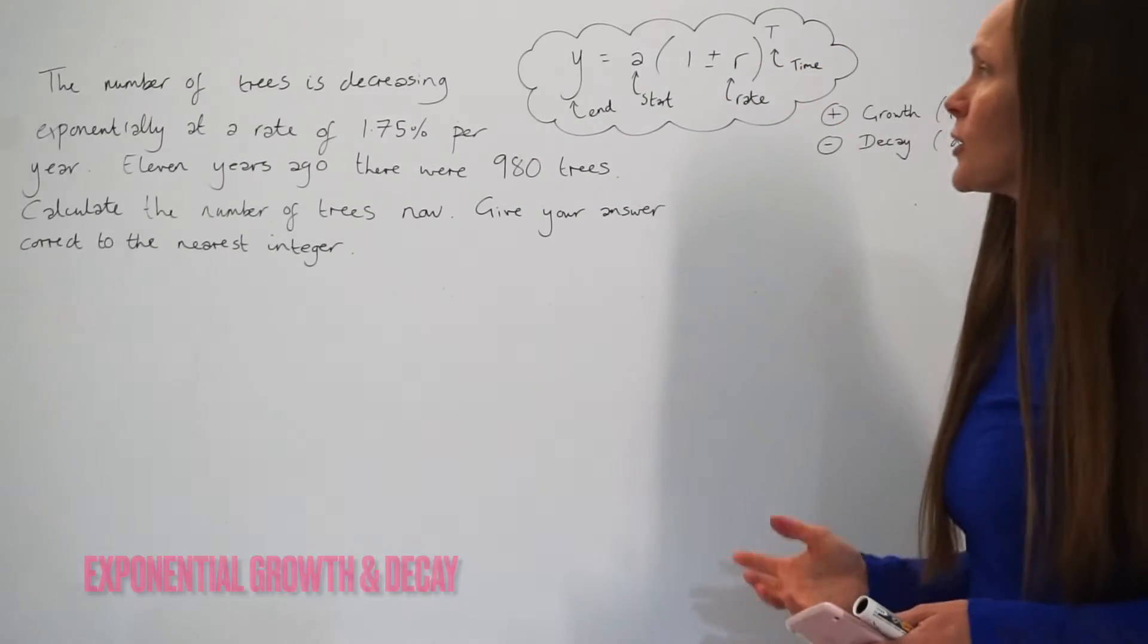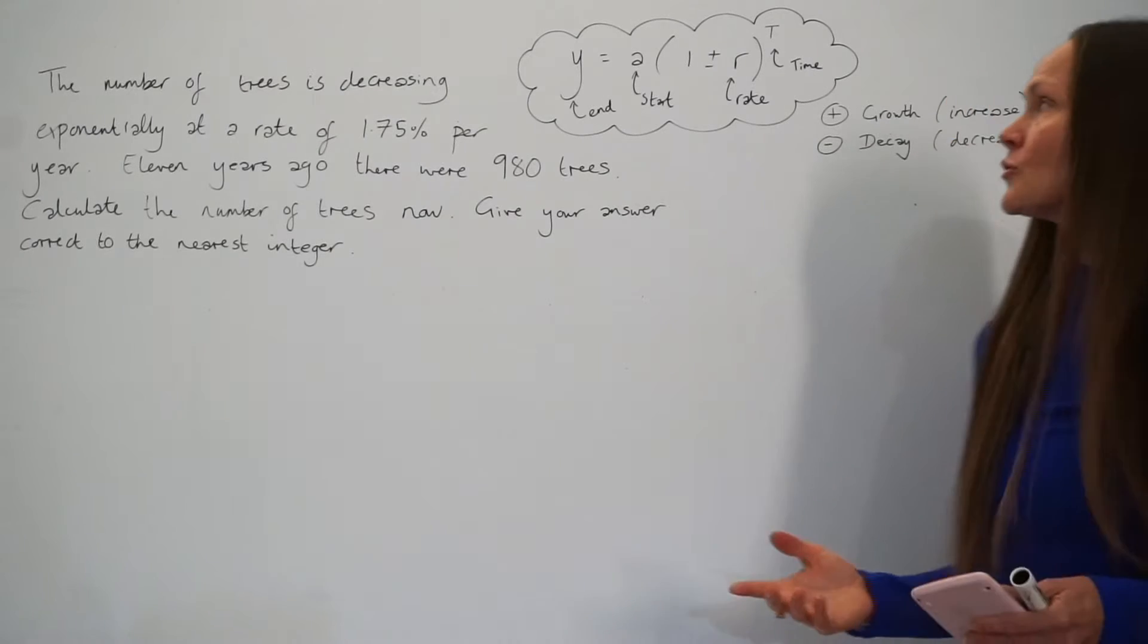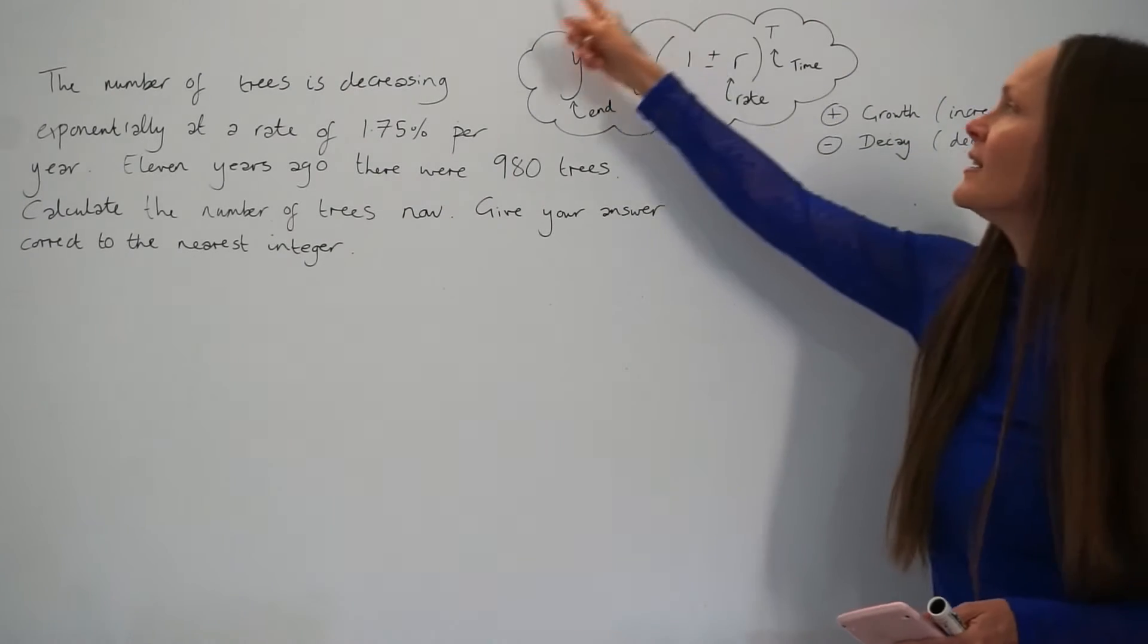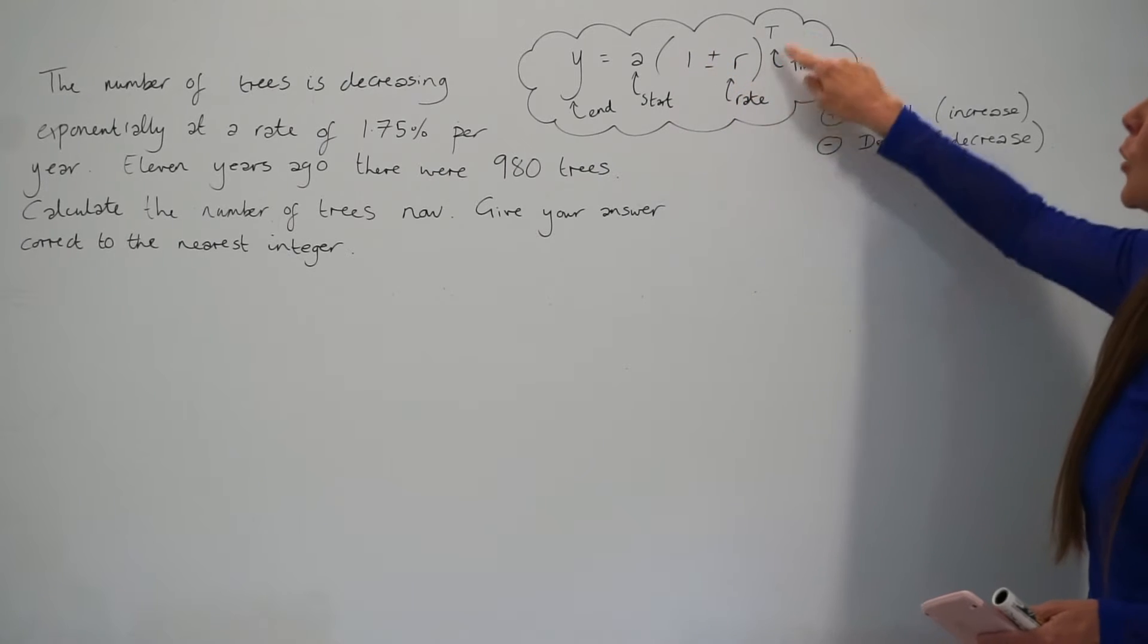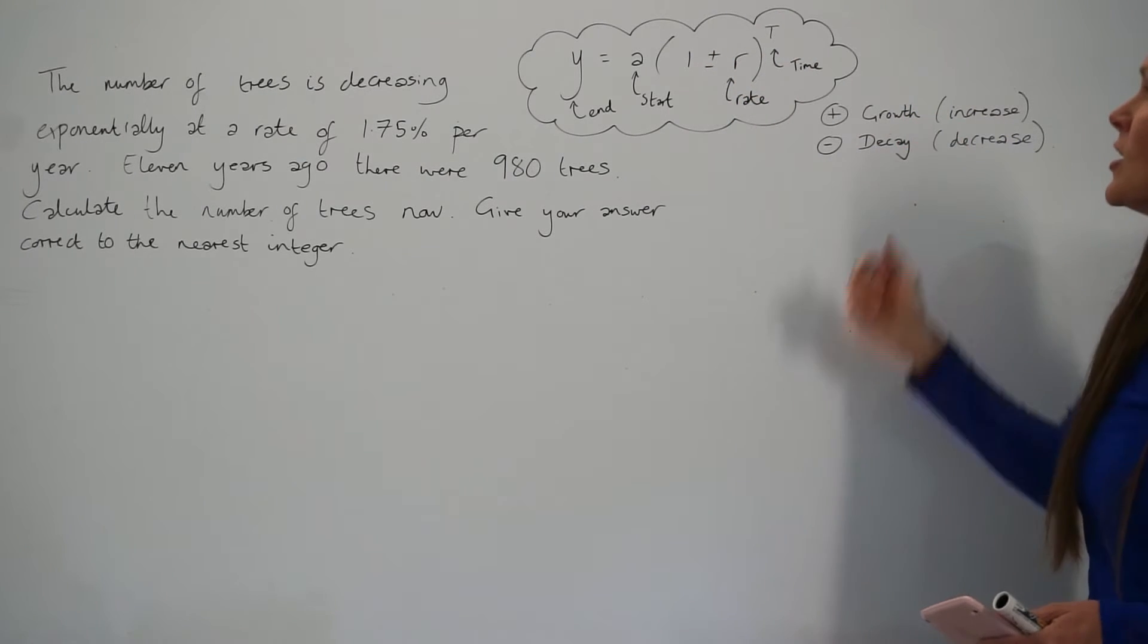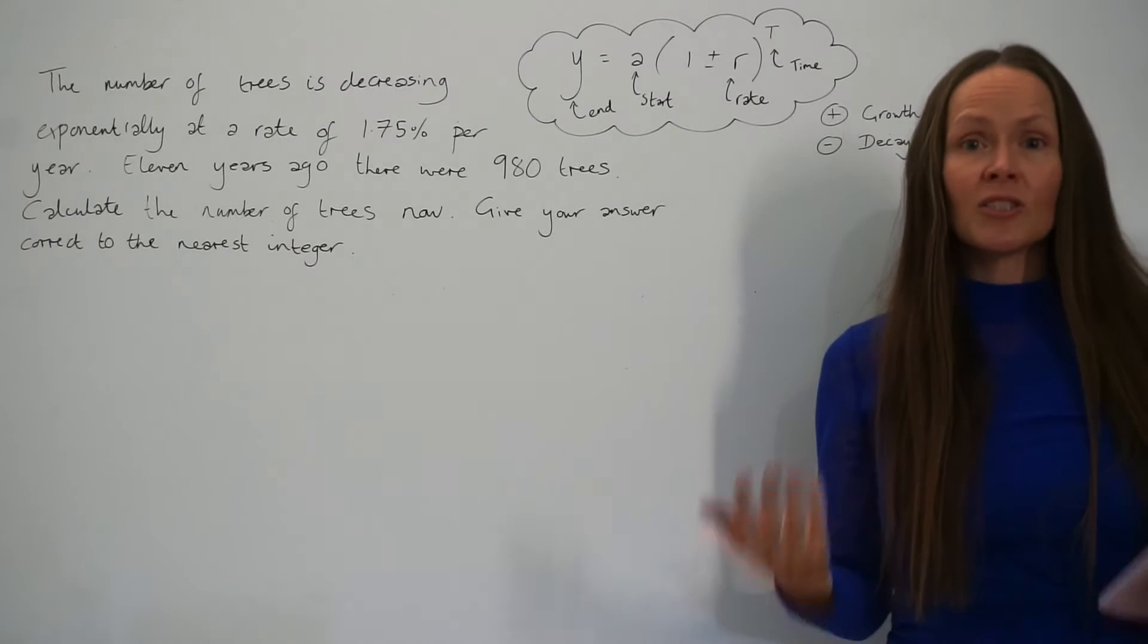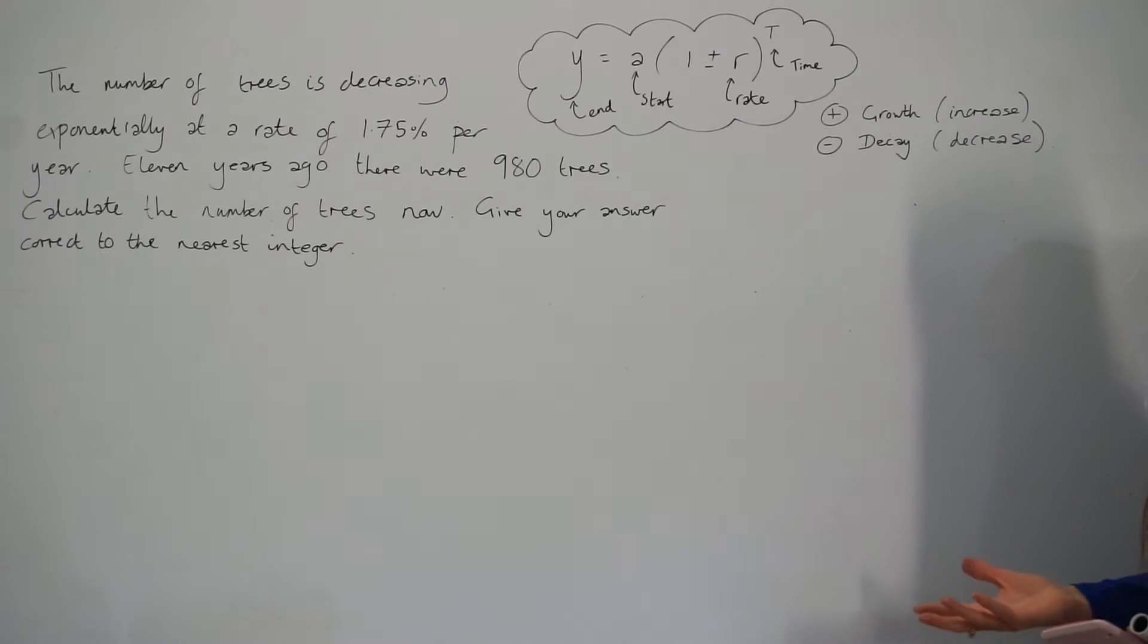So before we have a look at the first question, I'd just like to draw your attention to this formula here. It says y equals a, brackets 1, plus or minus r, all raised to the power of t. So this is the formula that we're going to be using for exponential growth and decay questions.